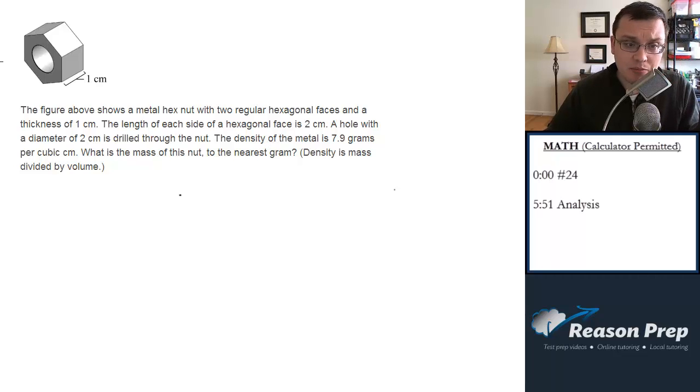Finding the volume for this is not simple. There is no equation in the front of the book for the volume of this figure, especially with the hole through it, so we need to do a little work here. Let's just ignore the hole for a second. Let's imagine this was just a hexagonal nut with no hole in it. What would be the volume then? The volume of any three-dimensional prism figure is the area of the base times the height. If we can find the area of this hexagonal face and multiply it by one centimeter of height, that will get us the volume. Now the question is, how do I find the area of this hexagon?